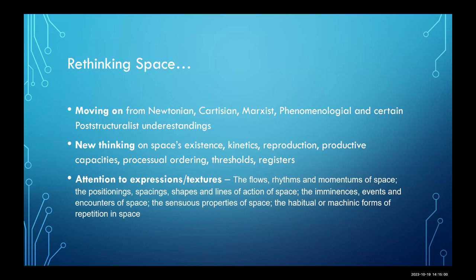What new understandings of space have emerged? I think there are four or five. The first is that in terms of its existence, space is not something that occurs on its own — it's not just out there, not an entity unto itself. It's entirely dependent on objects. Space is an emergent effect of relationality; it only comes into being through relationships between objects, of positionality, causality and change. Without objects there is no space.